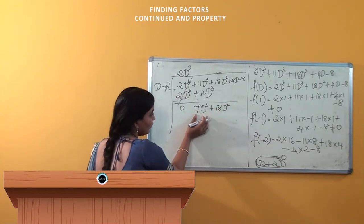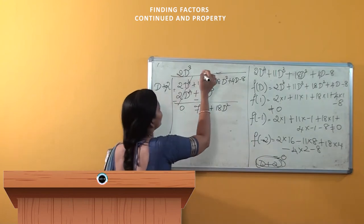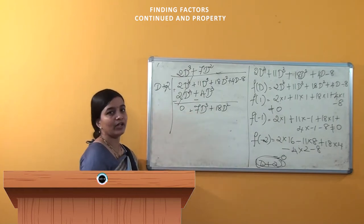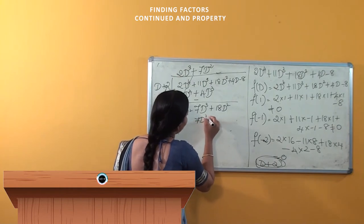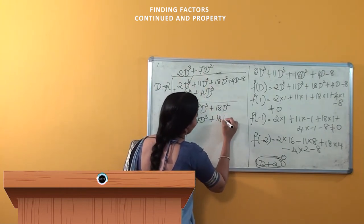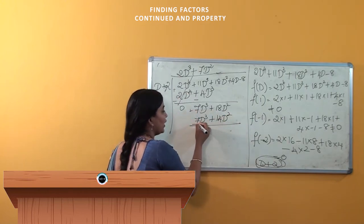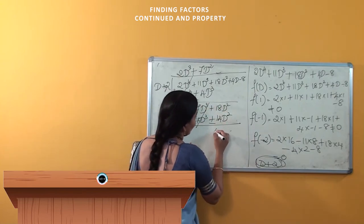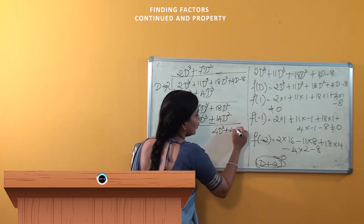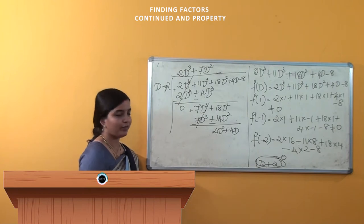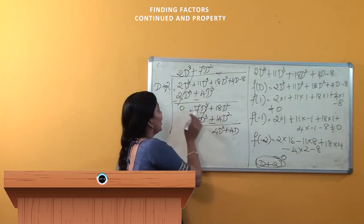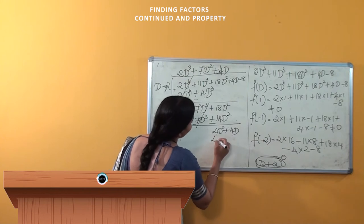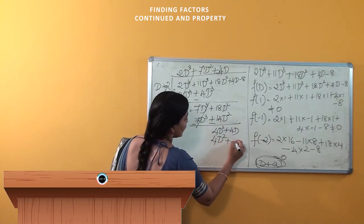Once again, you have to get 7d³ but you are having only d here, so you have to get 7d². Here it is plus, so plus 7d². You will get 7d³ + 14d². Change the signs: minus, minus. Plus and minus gets cancelled, so here you will get 4d² + 4d² giving 4d² + 8d.